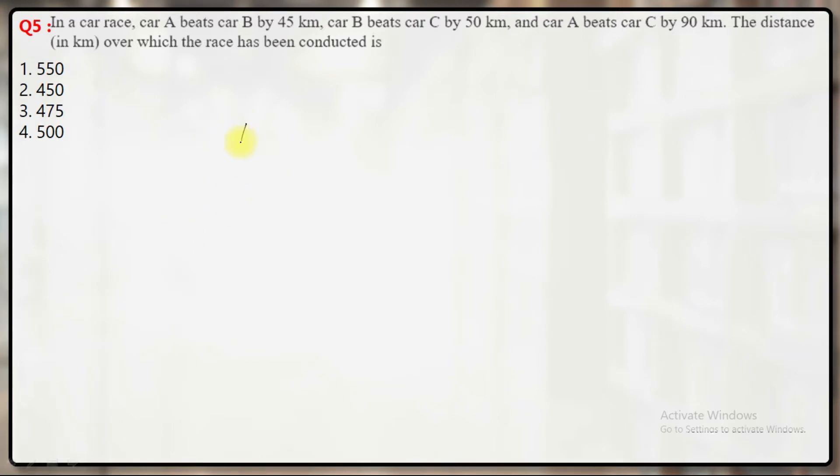It says that the 3 runners, 3 cars A, B, C. Let's say the length of track is L.